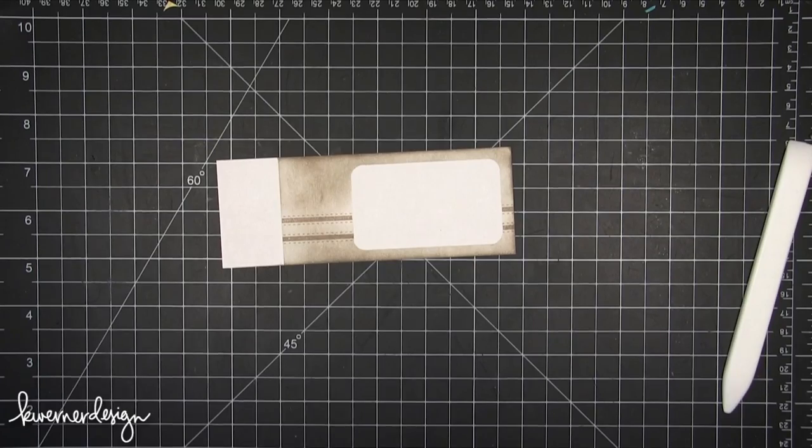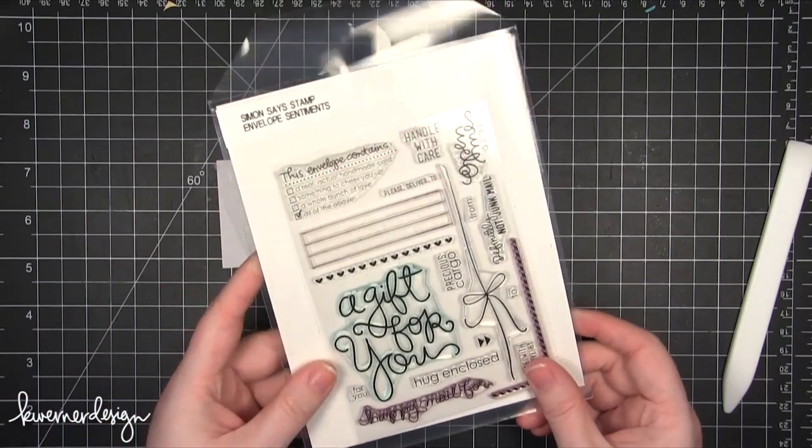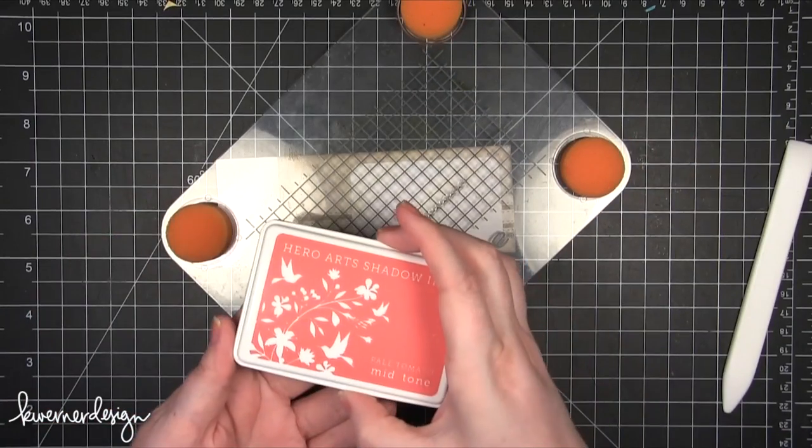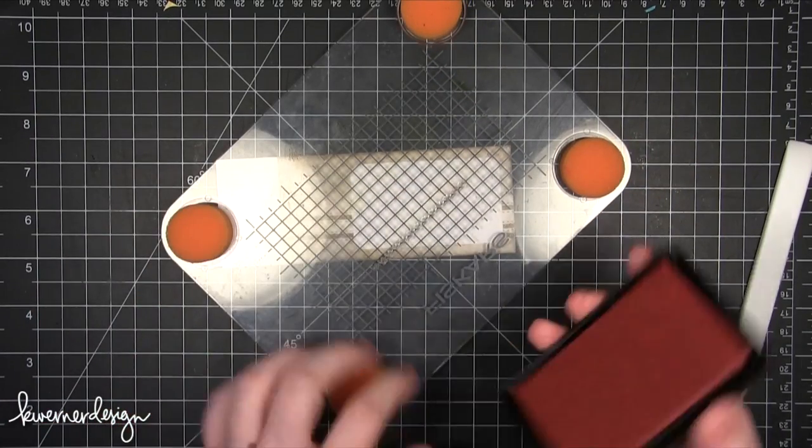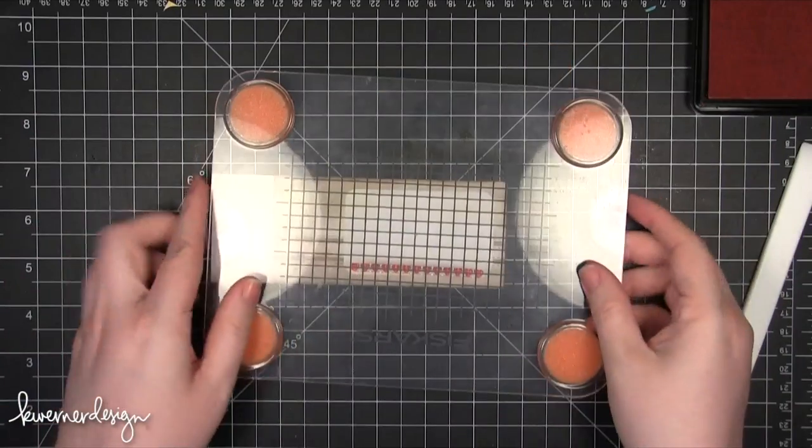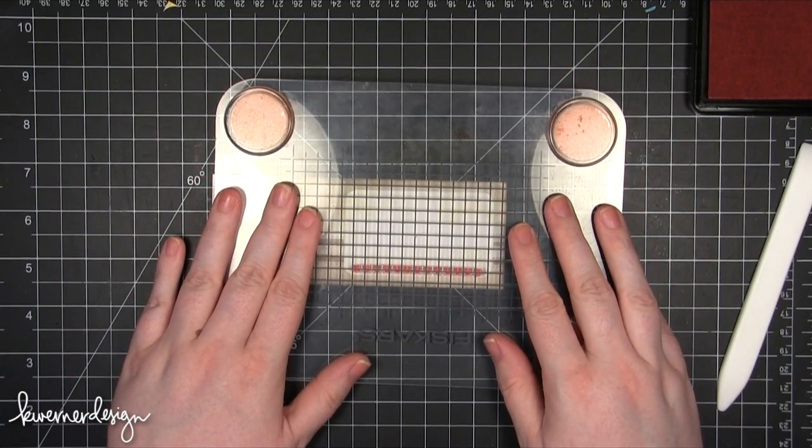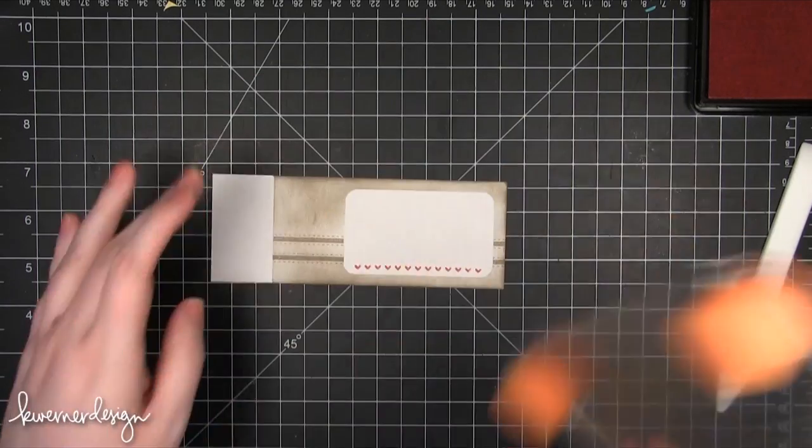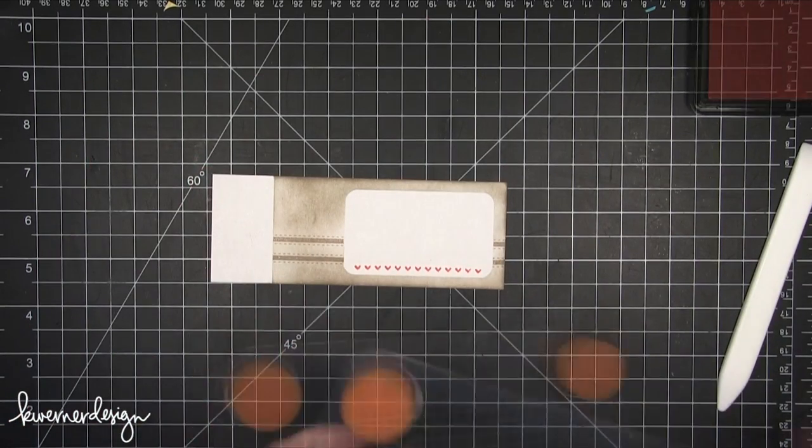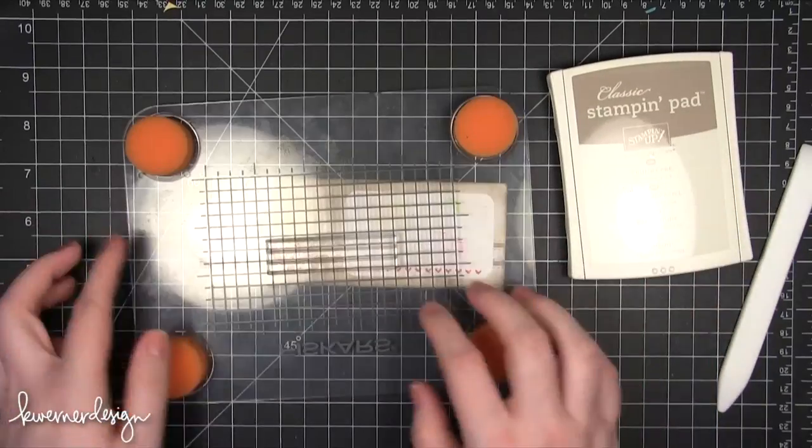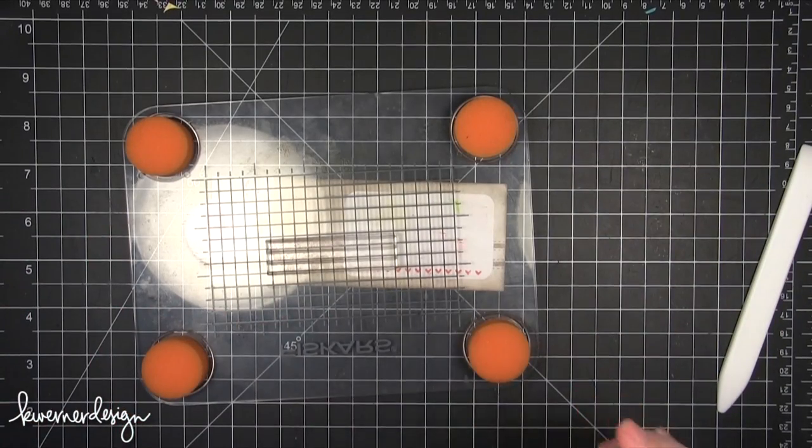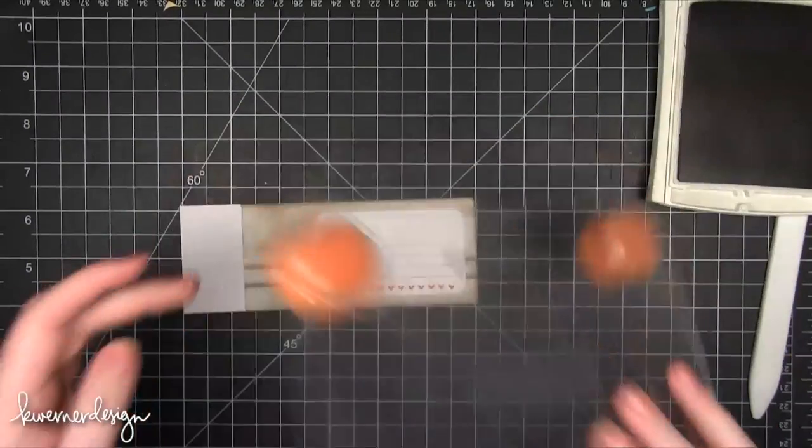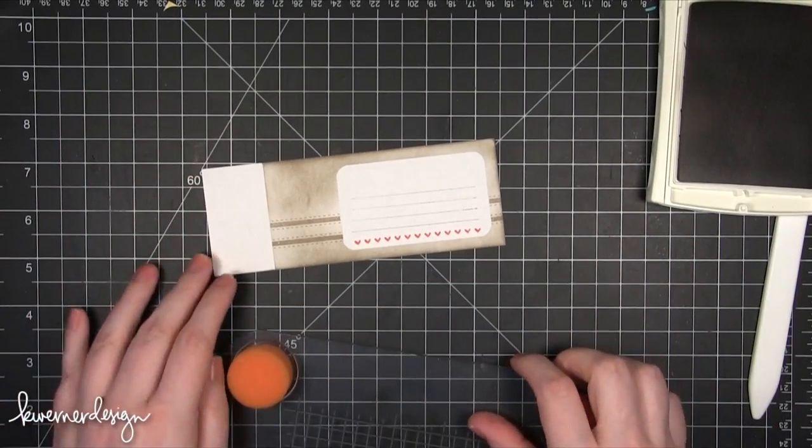I'm going to get rid of my craft mat here and I'm going to peel up my masking paper. If you want to you can put this back on the backing sheet for another envelope label. I'm using another Simon Says Stamp stamp set. This is Envelope Sentiments. I'm first starting with the line of hearts. I'm going to be using Hero Arts Pale Tomato ink. I'm just going to put those hearts at the very bottom of this section.